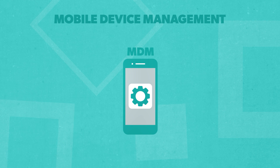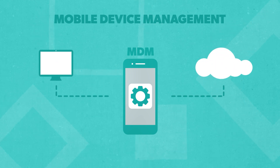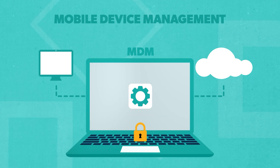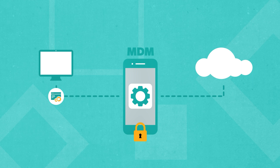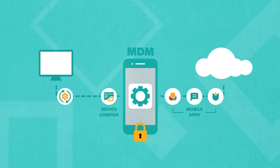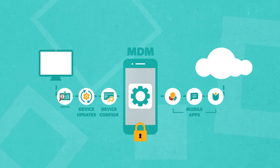Mobile Device Management, commonly referred to as MDM, involves managing and securing a company's mobile devices on-premise or in the cloud. It enables IT admins to set up device configurations, install apps, force device updates, and enforce security policies such as multi-factor authentication (MFA) on devices.